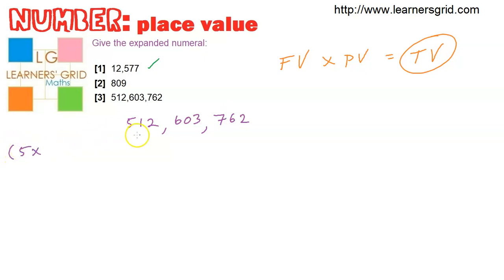So five times, that's a hundred million. Plus we've got one times ten million. Plus we've got two times one million. Plus six times a hundred thousand. Plus, we're up to the zero.